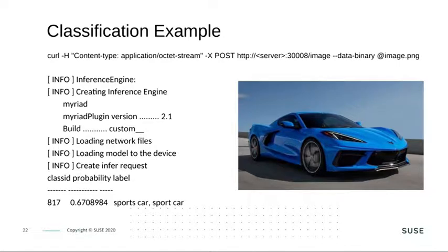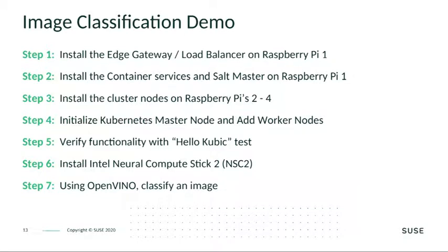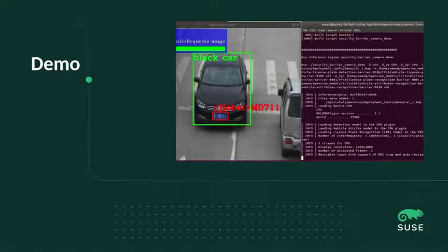At the end of the demo, I will show you a classification example — I will upload a picture to the cluster and get feedback about what is most likely shown in that picture. In summary, the demo steps are: first, install the edge gateway load balancer on Raspberry Pi 1 and install container services and the salt master on it; install OpenKubic on Raspberry Pis 2 through 4; initialize the Kubernetes master node and add worker nodes; show a HelloKubic test demo; install the Intel Neural Compute Stick on Raspberry Pi 4; and then run OpenVINO to classify an image. Now let's start the demonstration.